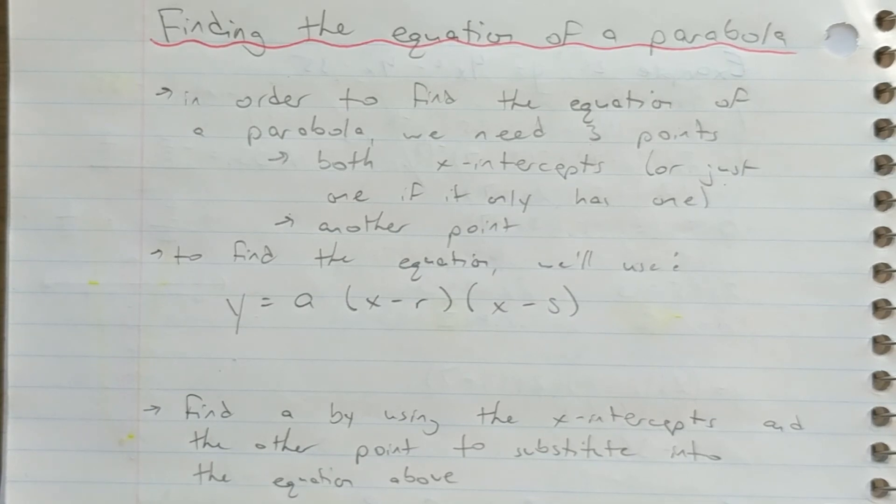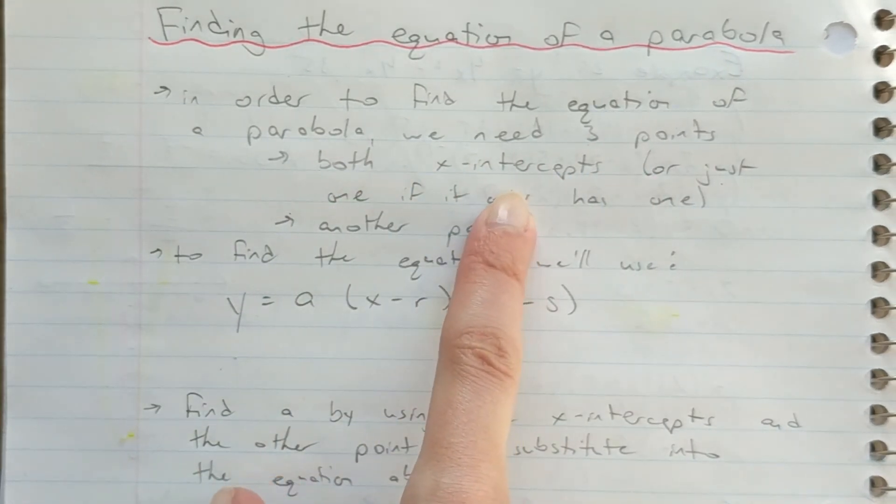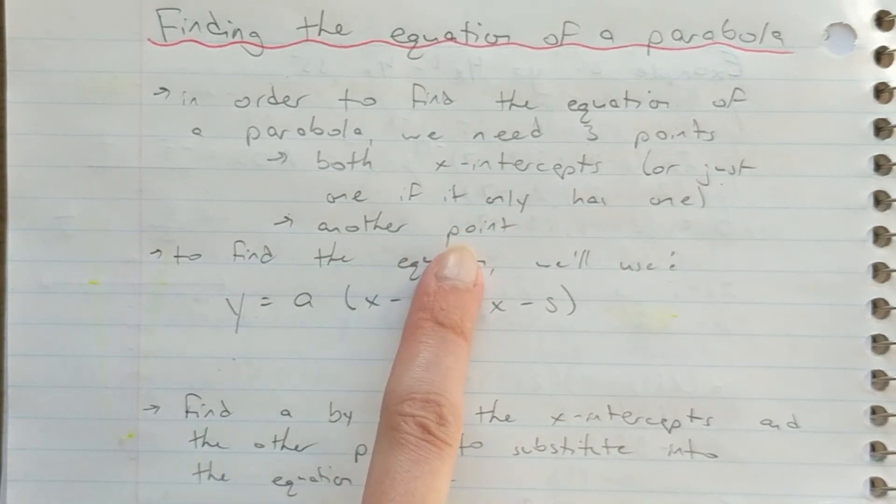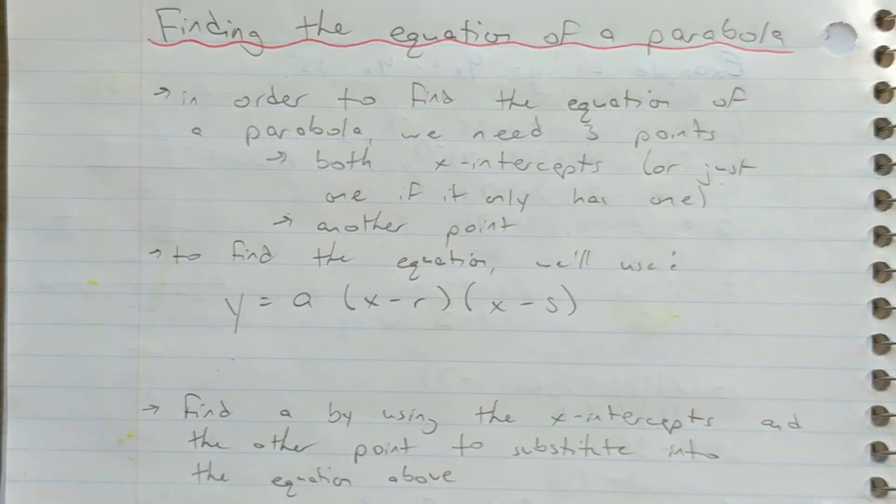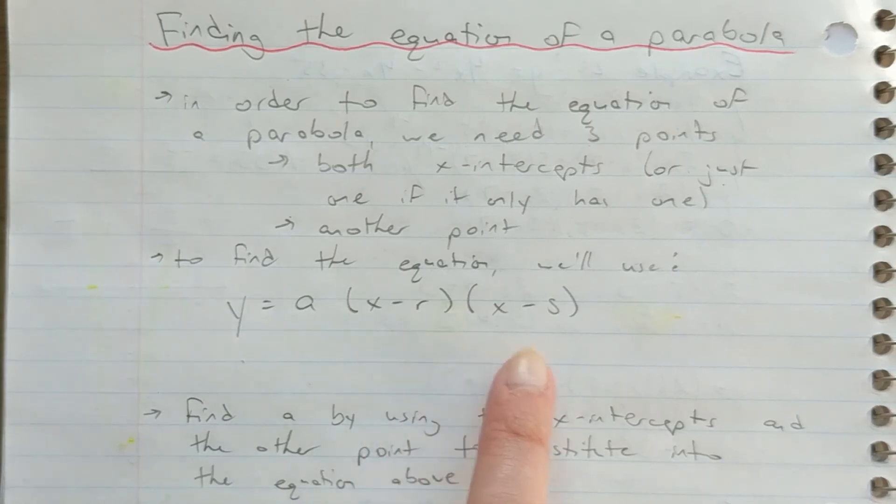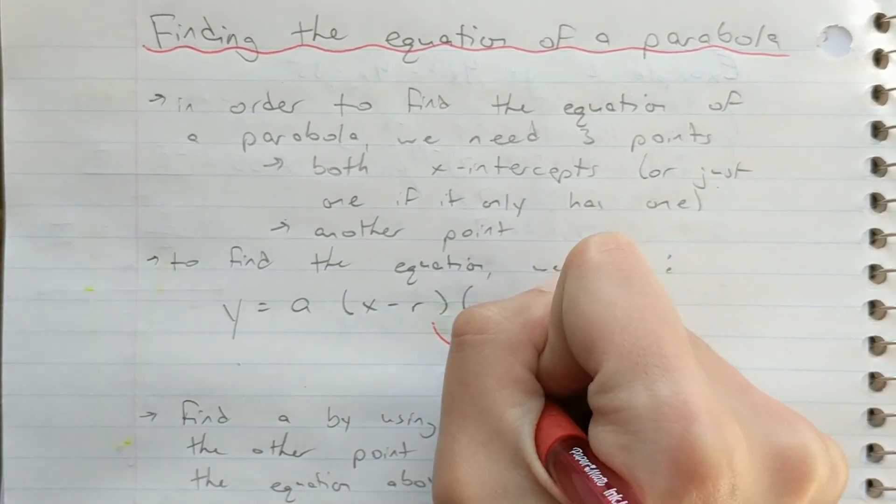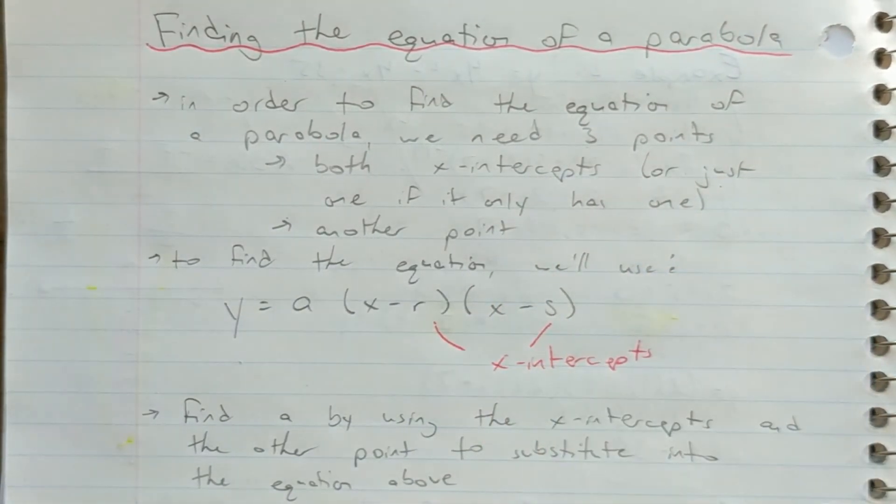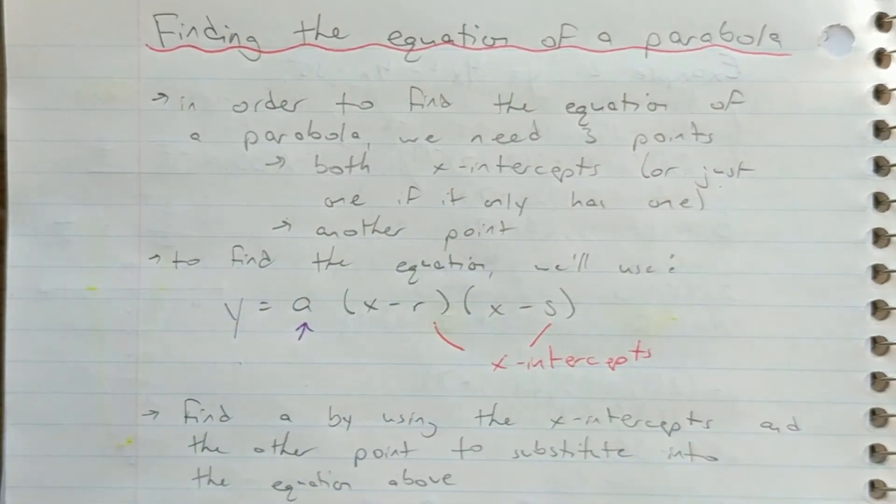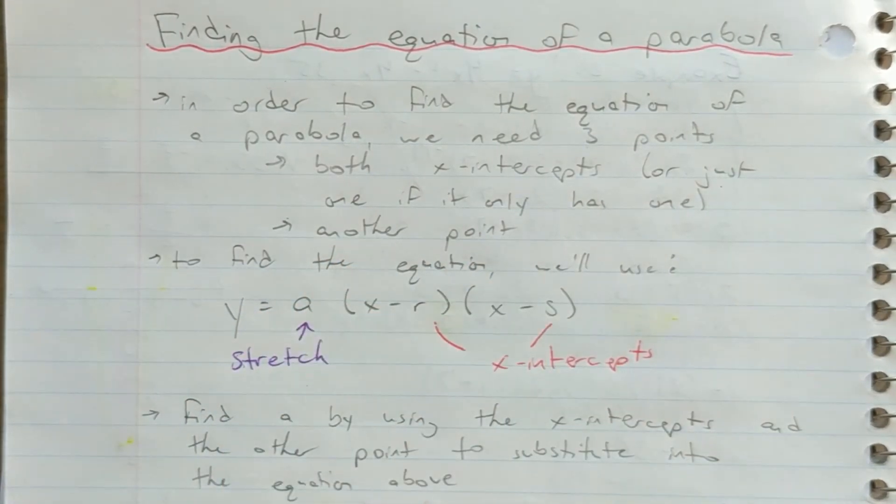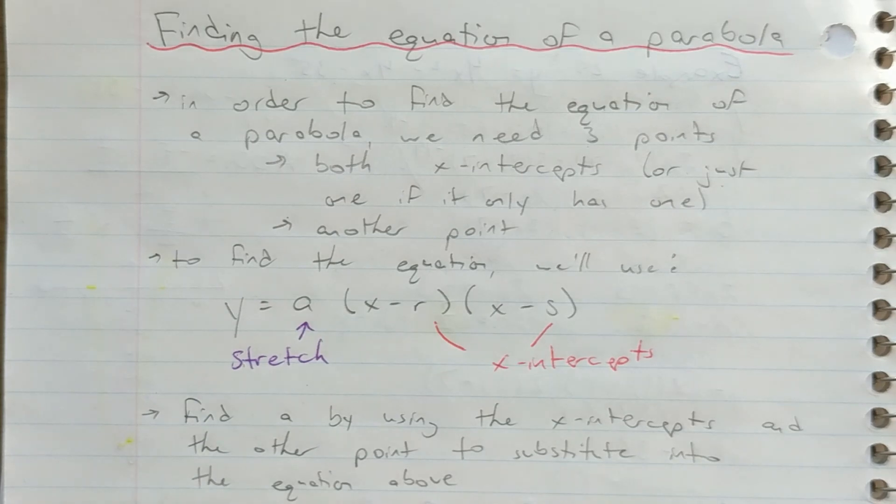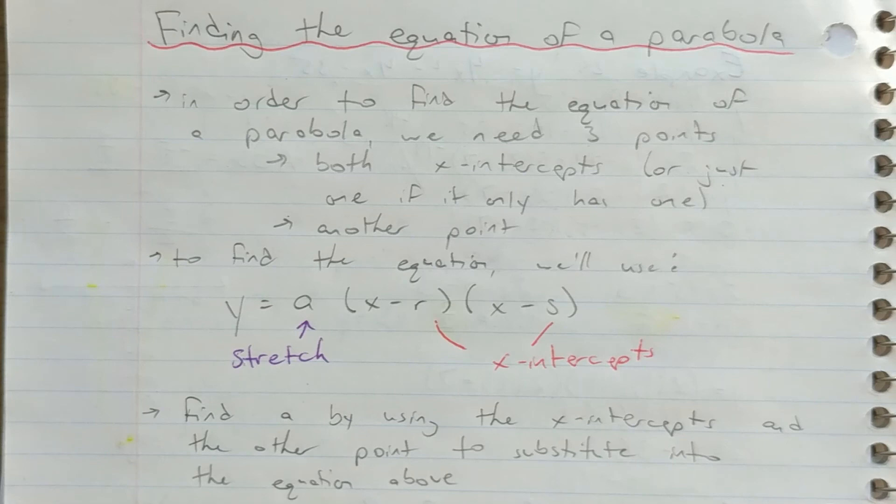Now that you know how to sketch a parabola given the equation, it's time to figure out how to go backwards. How to figure out the equation when you are given information about the parabola. In order to find the equation of a parabola, we need three points. We need both x-intercepts, or just one if we know it only has one, and we also need a third point. In order to find the equation, we need to use this template. Y is A times x minus R times x minus S. R and S are the x-intercepts. We knew that from the factored form. We also have this A value here. A is your stretch value. Just like you saw in the video, your parabola could be stretched or compressed either way, and we need to know what this is in order to figure out the exact shape. We can find the value of A by using the x-intercepts in our third point, substitute everything in, and deduce what the equation is.